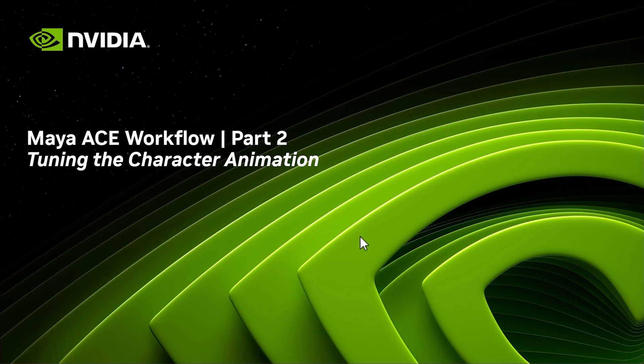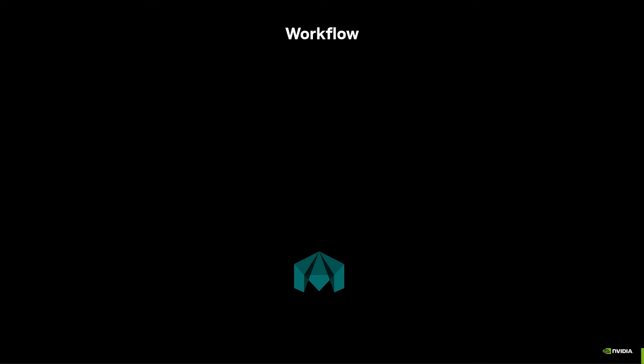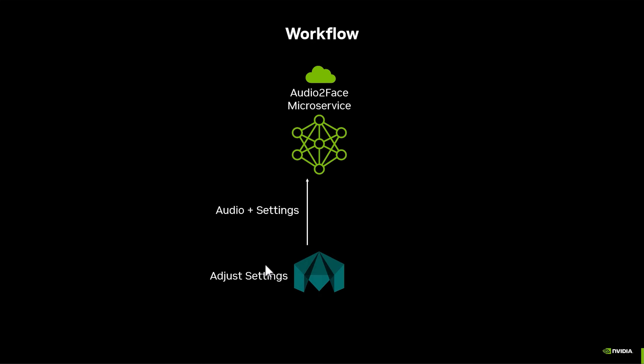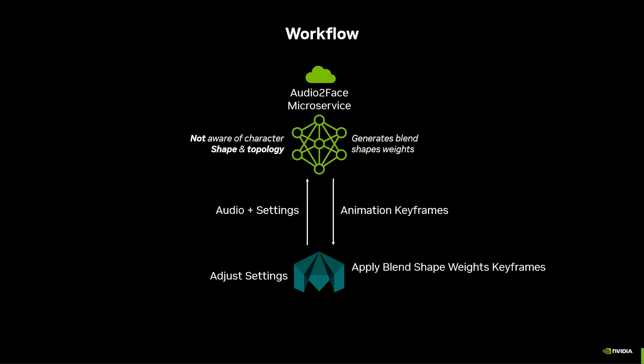Now that our character is ready we can start fine-tuning the facial animation. This is not a typical Maya workflow. When you're in Maya adjusting settings and changing facial parameters — like blend shape multiplier and offset — nothing will change directly. What's happening is the audio file and settings are sent to the Audio2Face microservice, which analyzes the audio and generates the animation. The microservice is not aware of the topology of your character; it generates blend shape weights, which are sent as animation keyframes and applied to the blend shapes of your character.